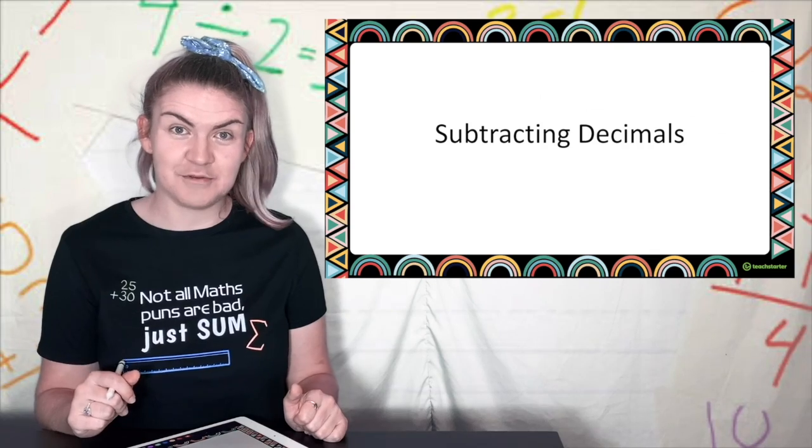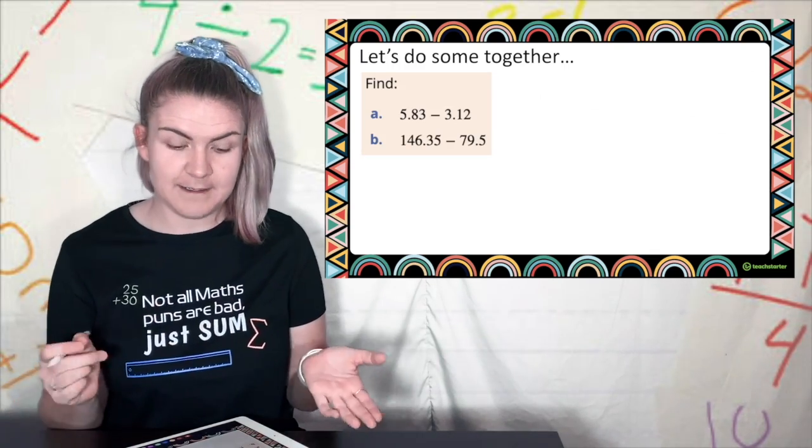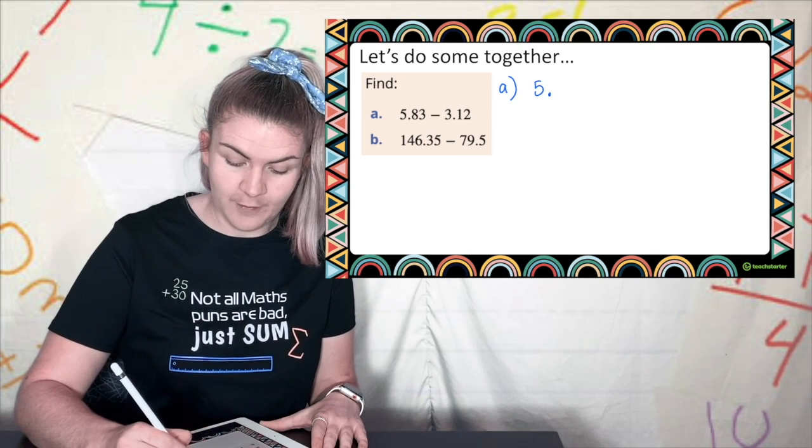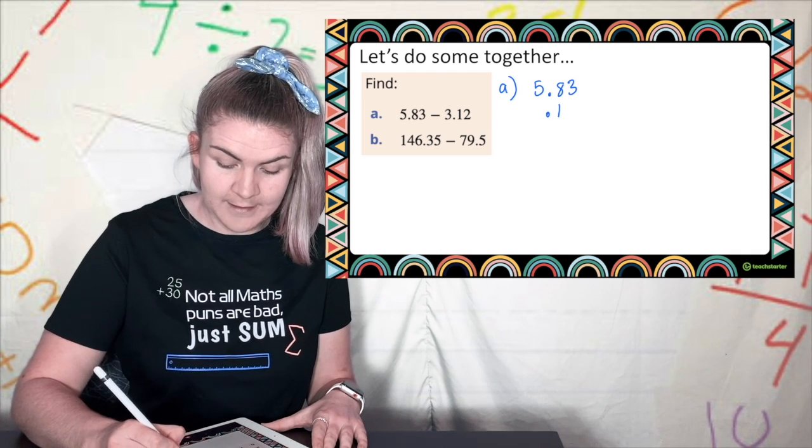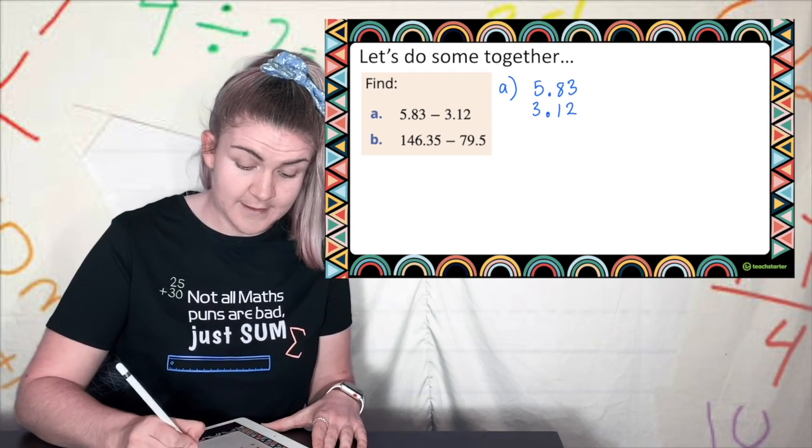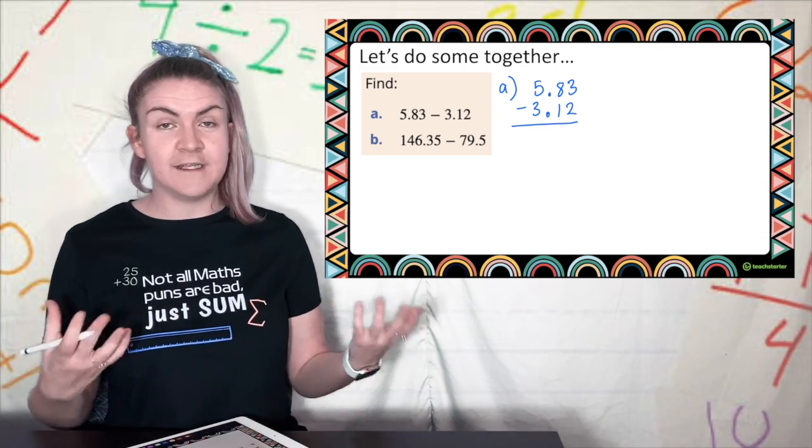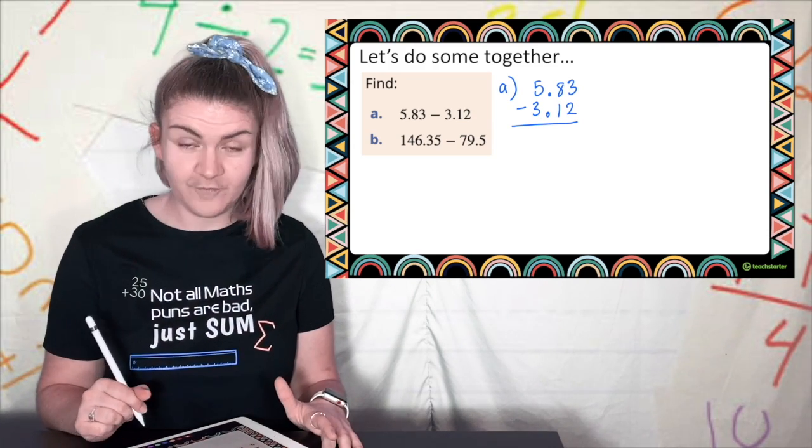Let's look at subtracting decimals. As you guessed it, subtracting decimals follows the exact same procedure. So I'm going to write a and I'm going to write it out. 5.83 and then I'm going to put my decimal point in a line and write it out on either side and put in my operation which is subtraction and a line.